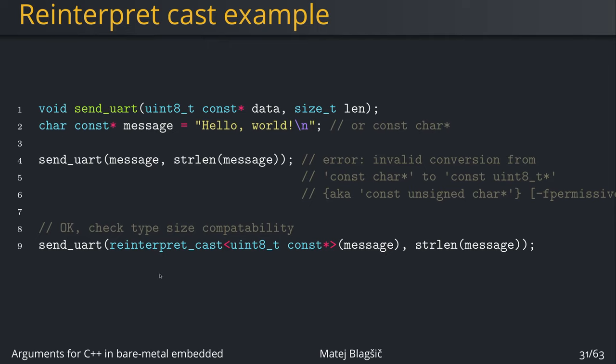Another note: because reinterpret_cast tells the compiler to treat the different data pointed to by the pointer differently, we have to really check that the data is at least of compatible size. In this case, we know for our platform that uint8_t is the same size as char, so everything is fine.